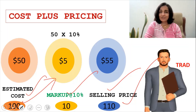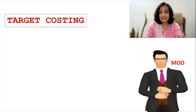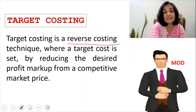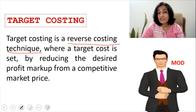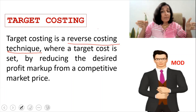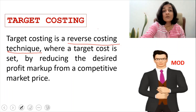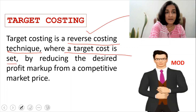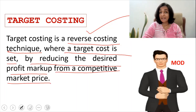Now we will go to Mod's approach of doing business. Mod employs the method called target costing. Target costing is a reverse costing technique — he's going to work in reverse. Trad was working from the cost price, adding the markup and then arriving at the selling price. But what Mod is going to do is start with the selling price and work backwards. That's known as the reverse costing technique, where a target cost is set by reducing the desired profit markup from a competitive market price.